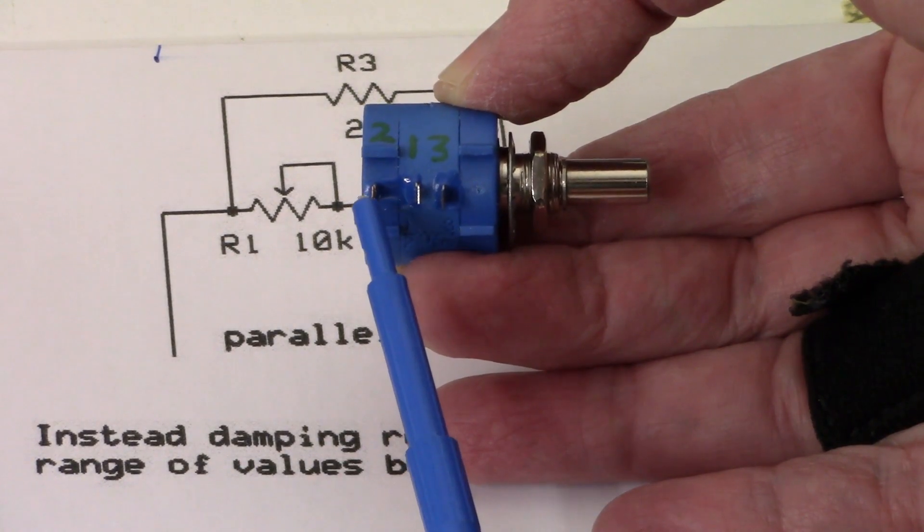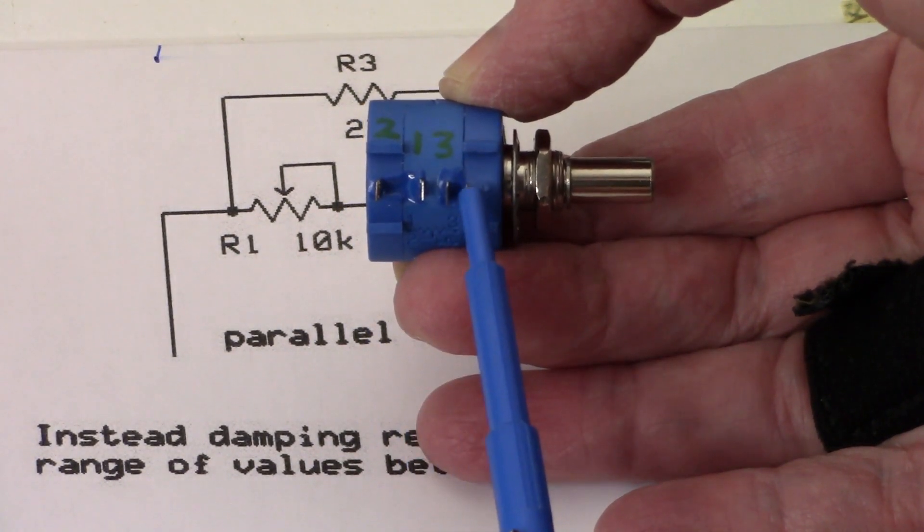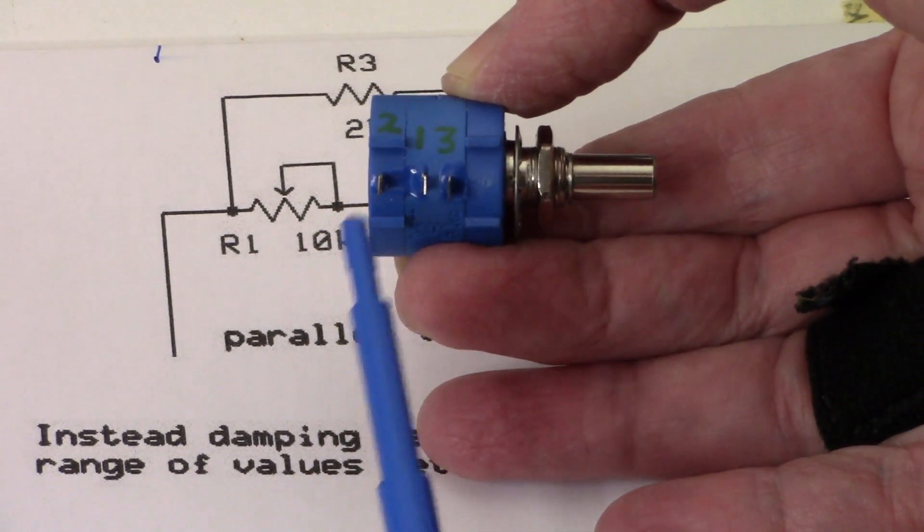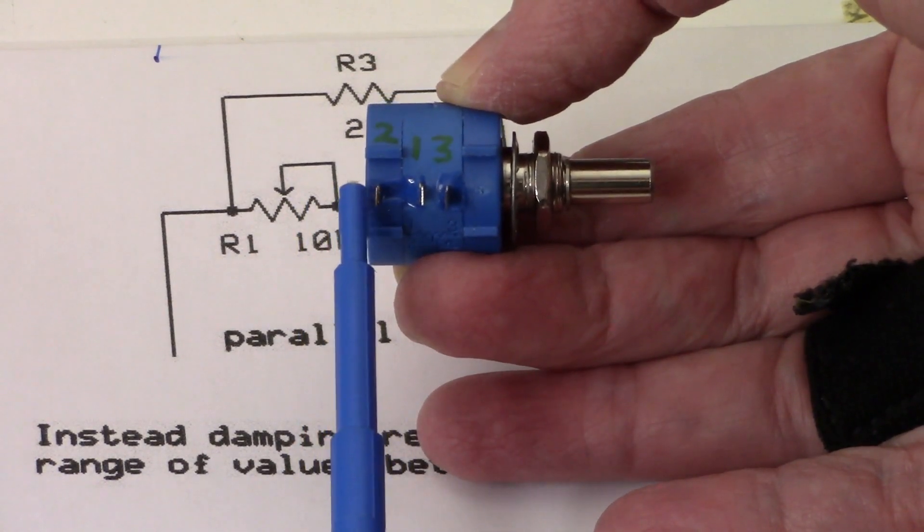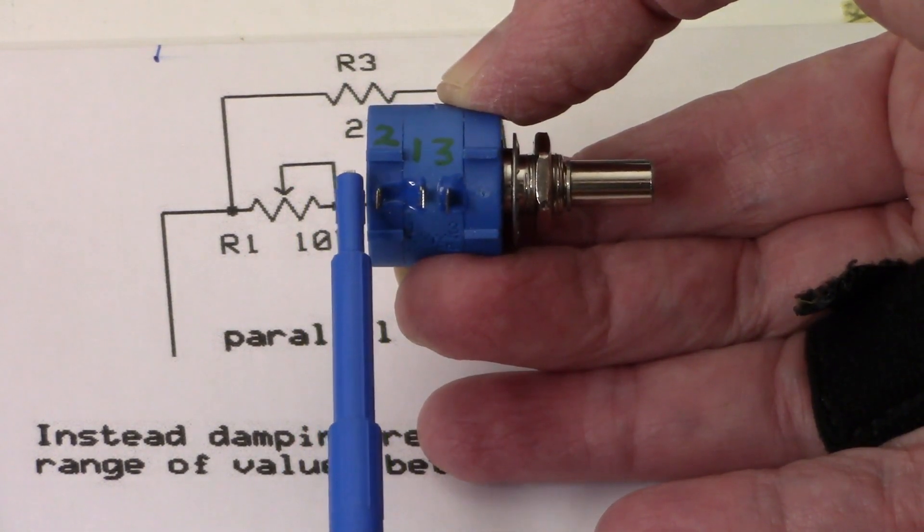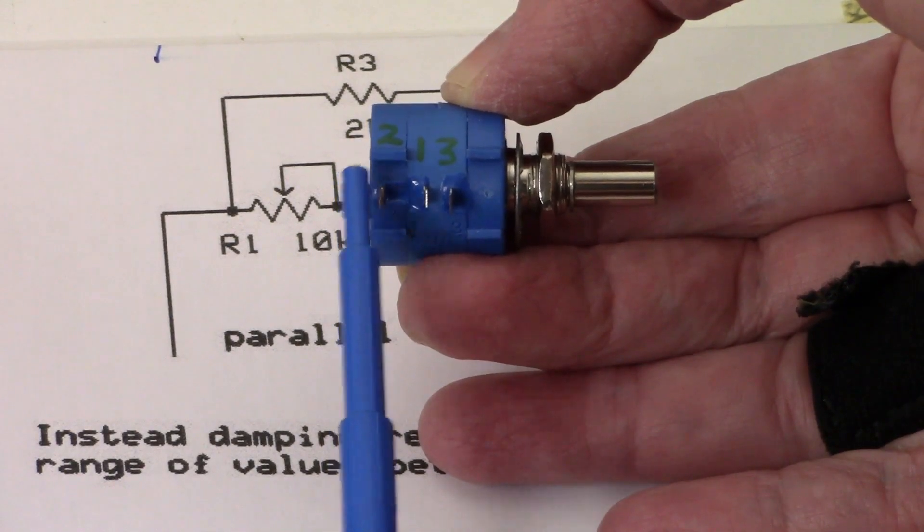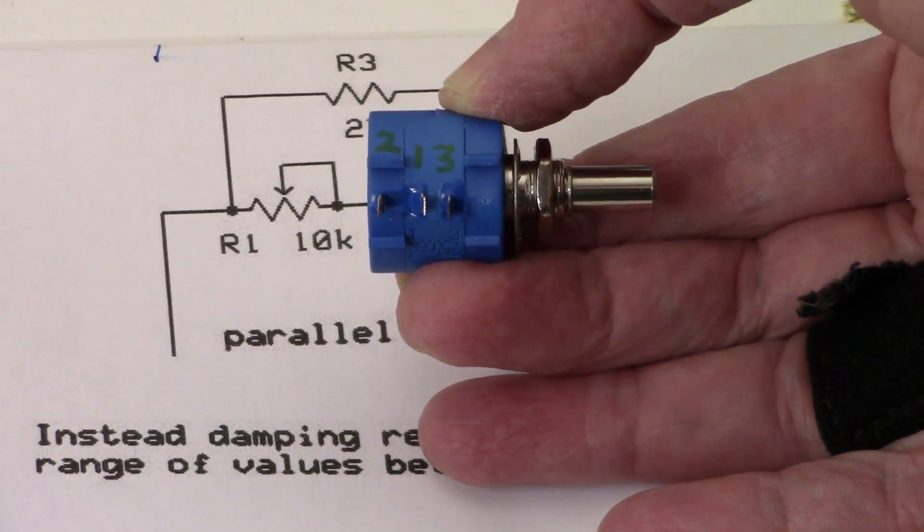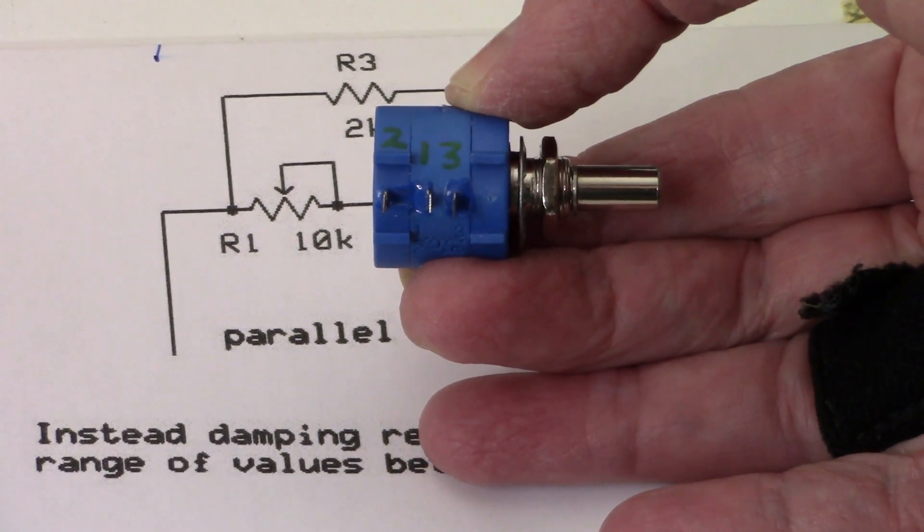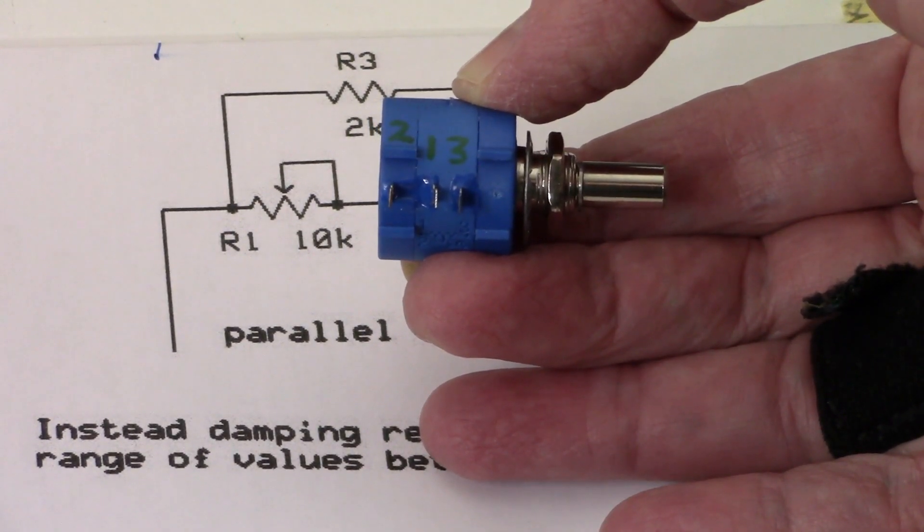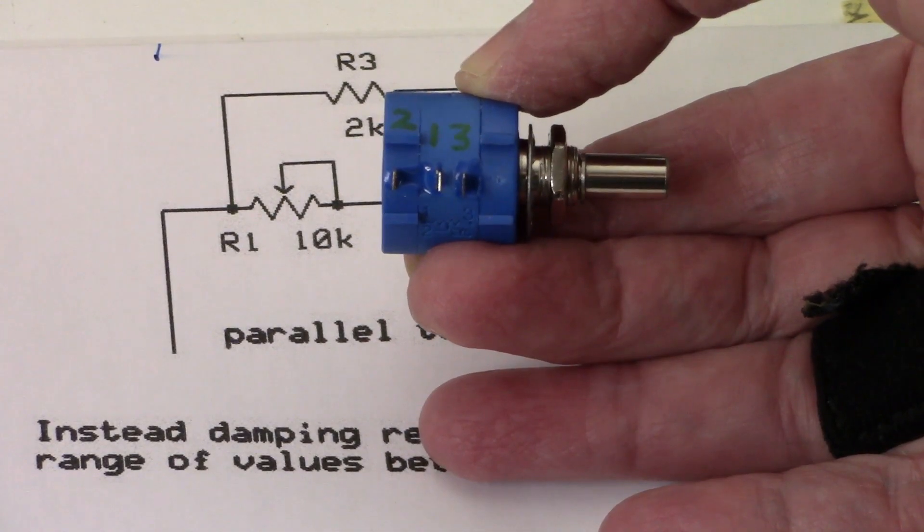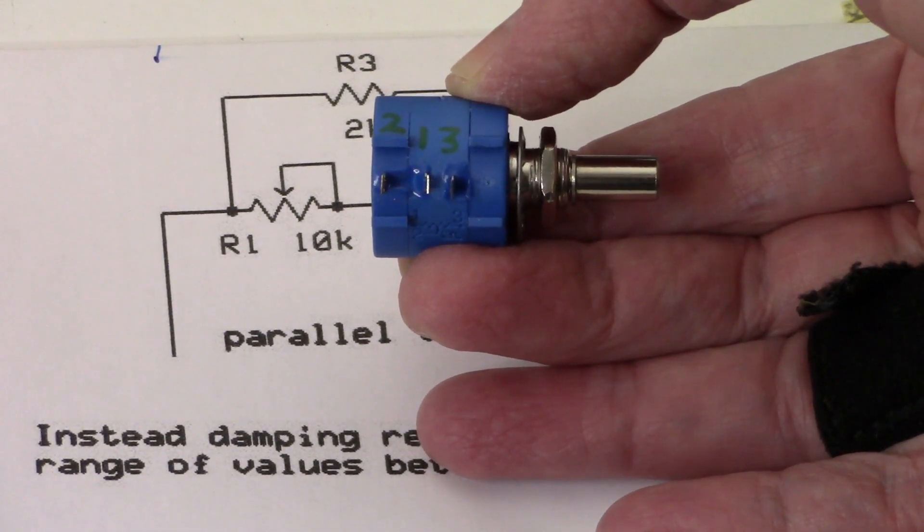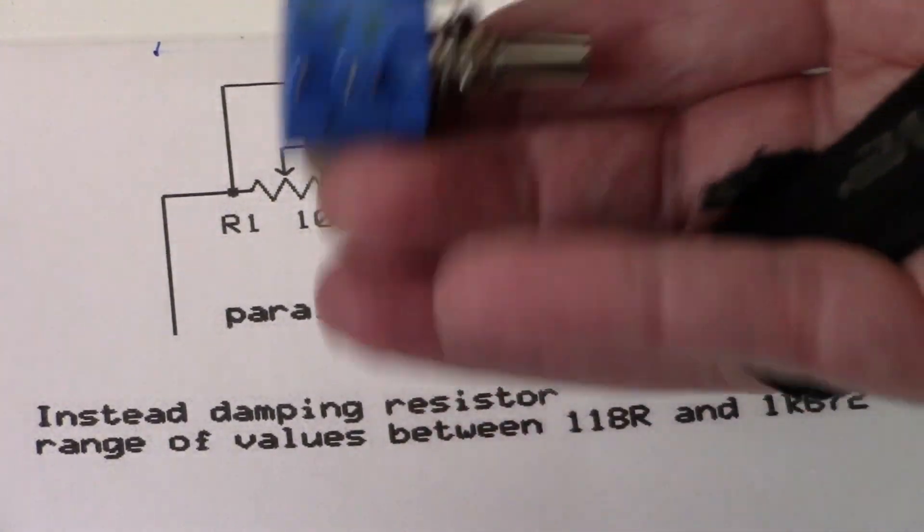Well, they're actually not. The first one, I think you can see I've marked here, the first one is two, second one is one, and the third is three. That causes a little bit of confusion sometimes. And this is a 10k Bourns pot.